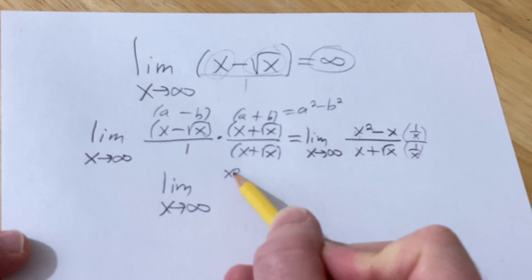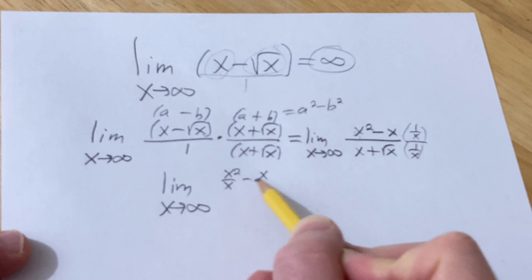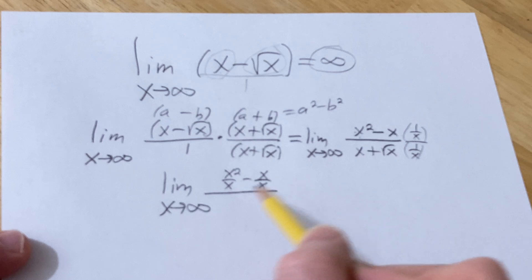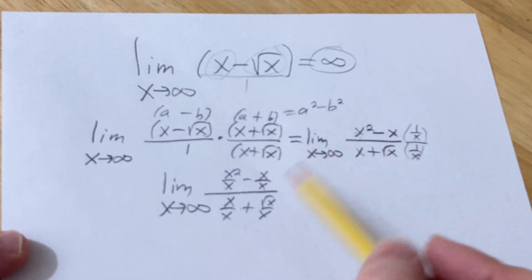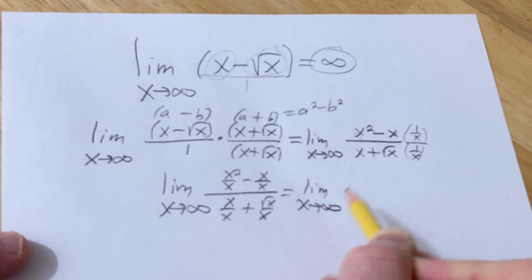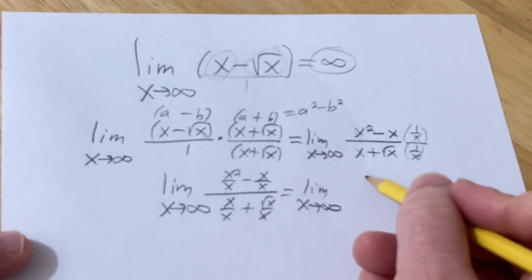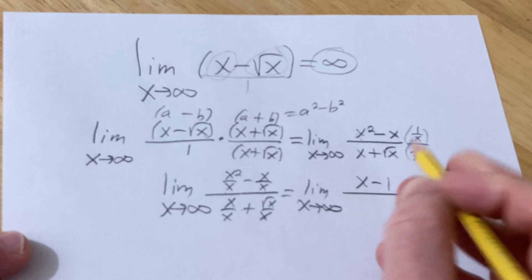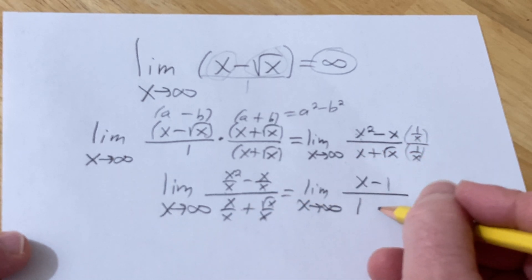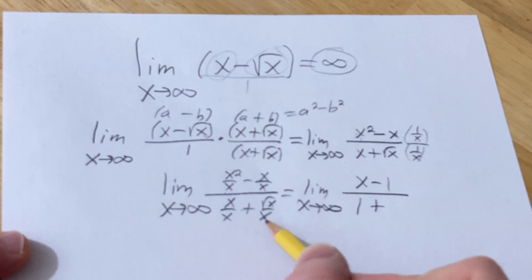So distributing through, we have x squared over x minus x over x, over x over x plus square root of x over x. Just distributing through the x, going pretty quick here. This is the limit as x approaches infinity. x squared over x is just x minus 1. Here we get 1 plus the square root of x over x is 1 over the square root of x.